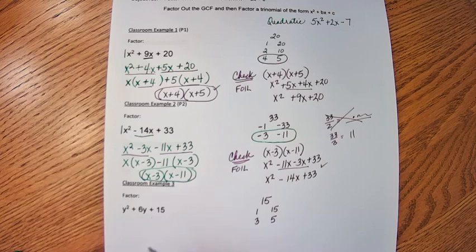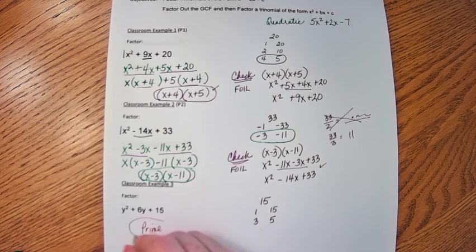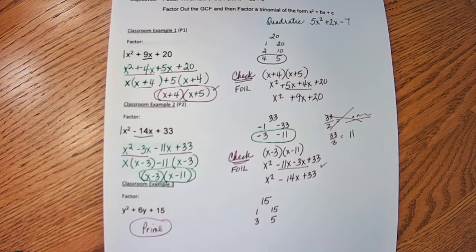So what that means is this polynomial cannot be factored. This polynomial is prime. There are not two factors multiplied together that will give me that polynomial. And that's sometimes, sometimes your polynomials will be prime.